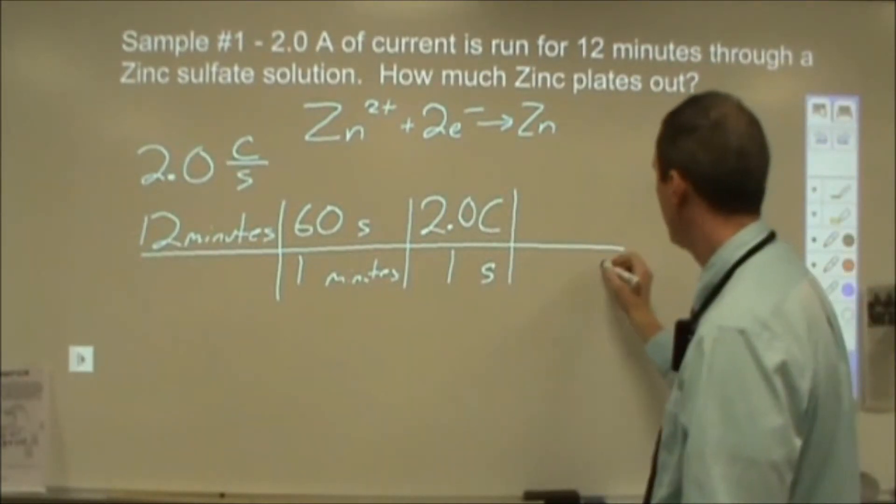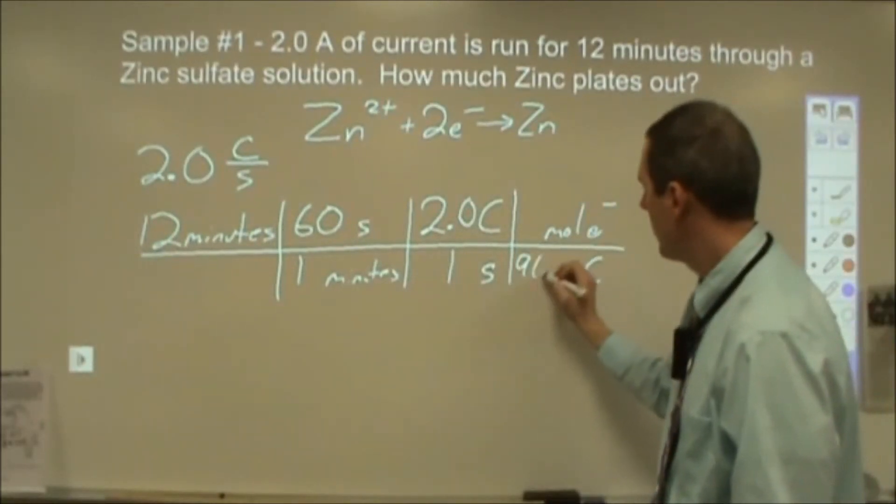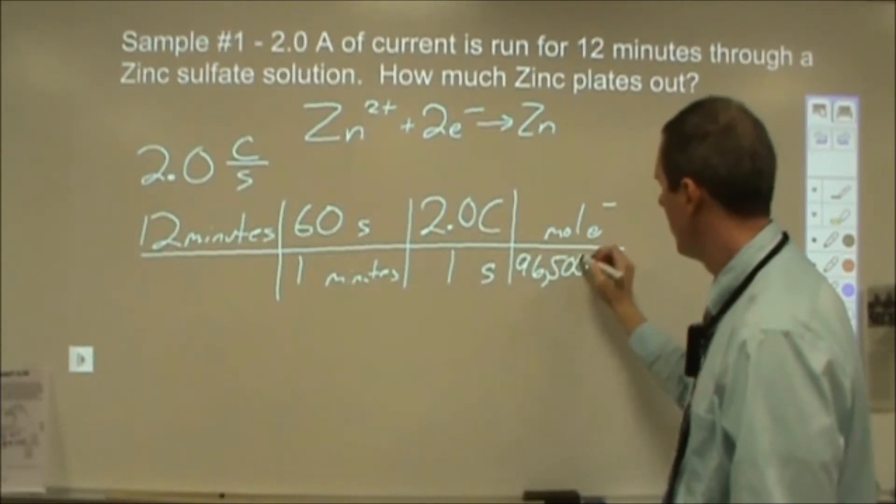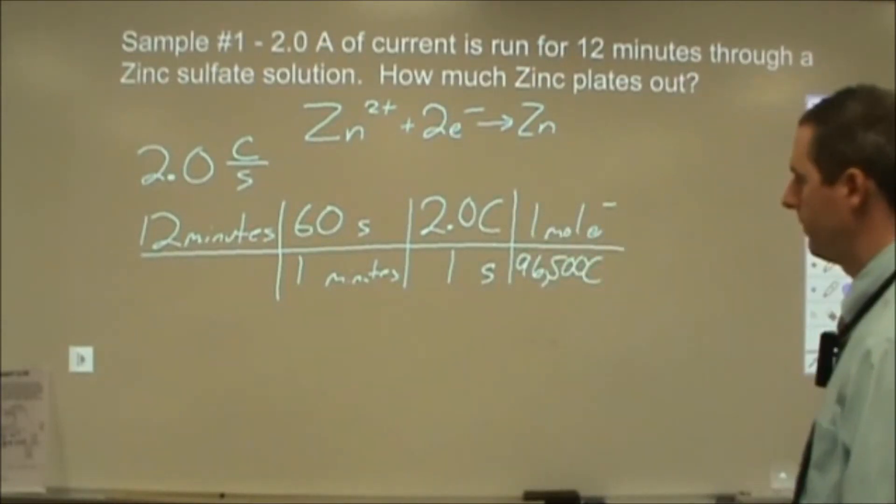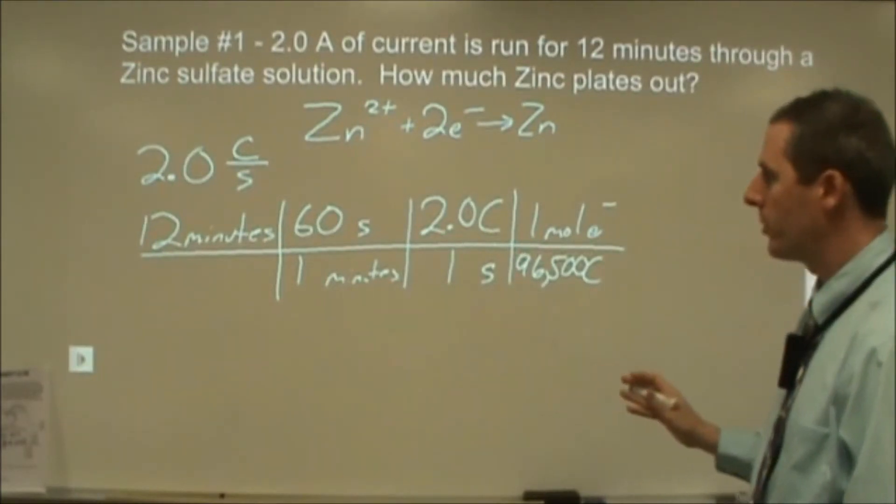Next, I'm going to use coulombs to turn into moles of electrons. And this is where that Faraday constant comes in. So 96,500 coulombs is 1 mole of electrons. Now at this point, this is going to turn into a little bit more of a normal stoichiometry problem.